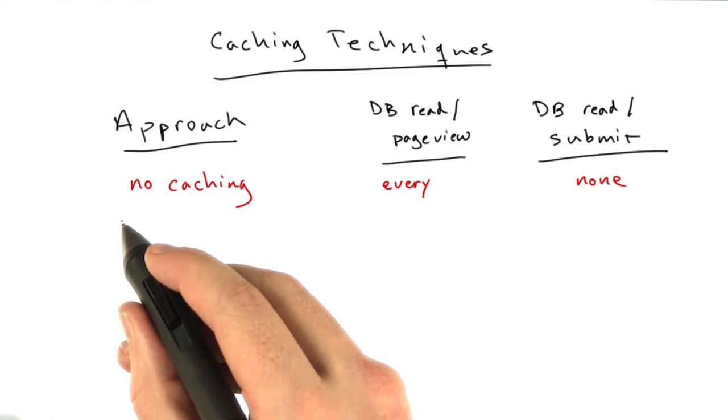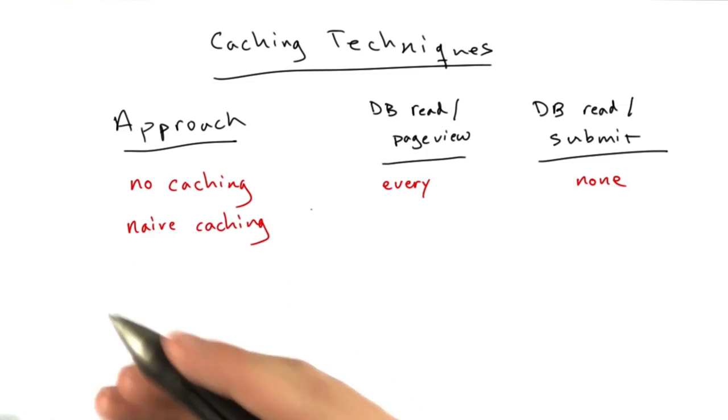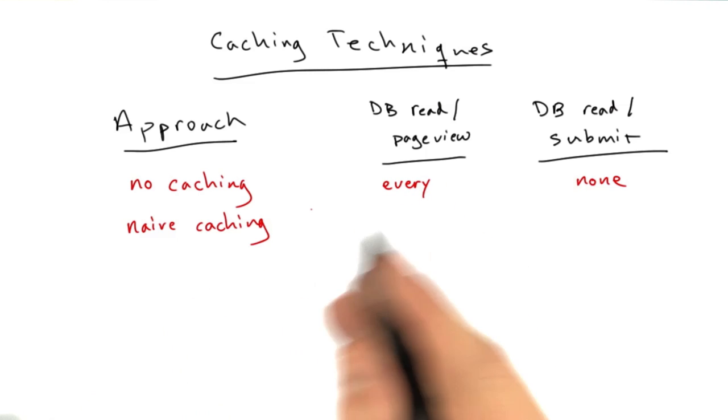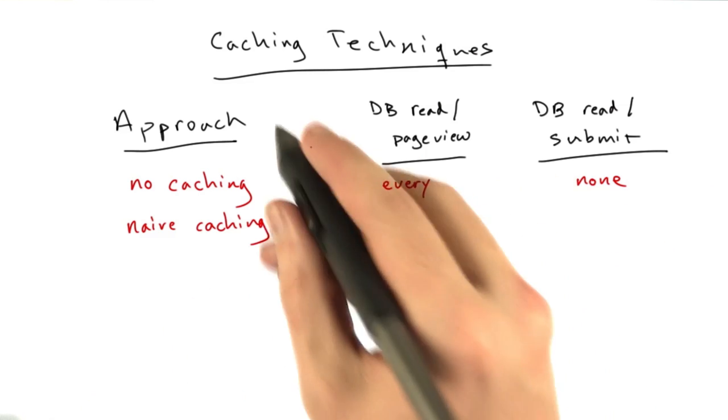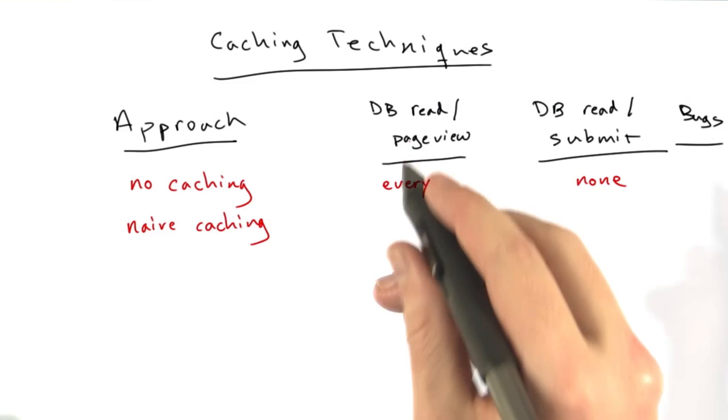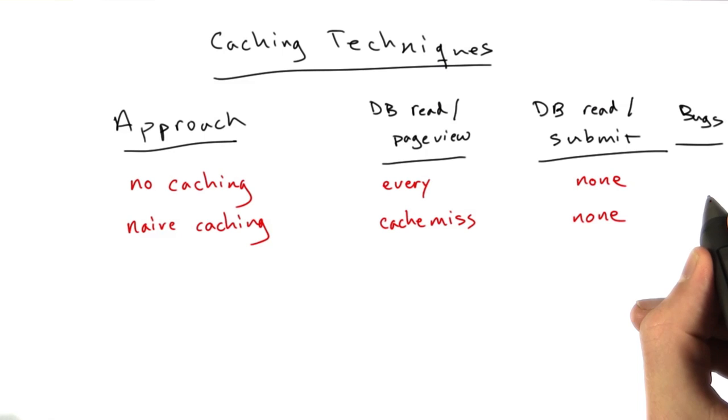Then we did what I would describe as the naive caching approach, which was basically having a basic cache. If the cache is empty, do the database read. And if it's not, return the result. We'll add a third column called bugs. So naive caching only does a database read on a cache miss, doesn't do any reading on a submit, and it's full of bugs.